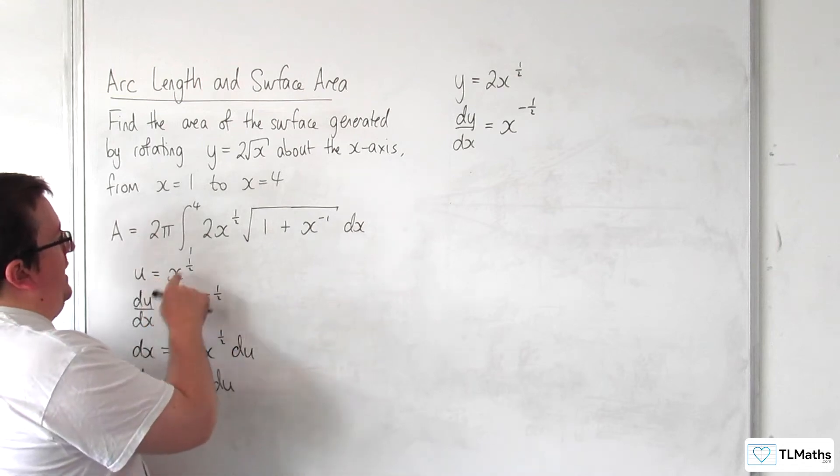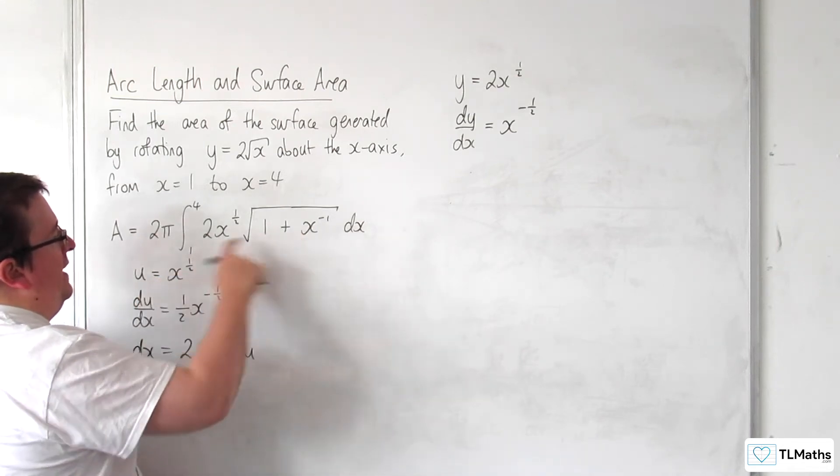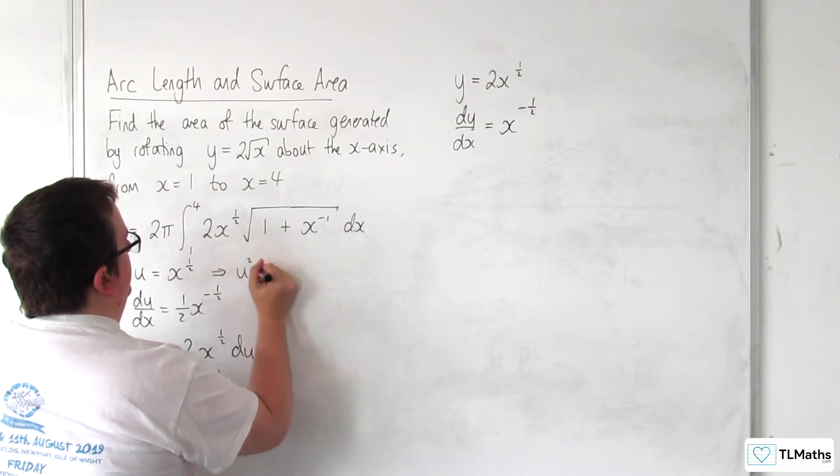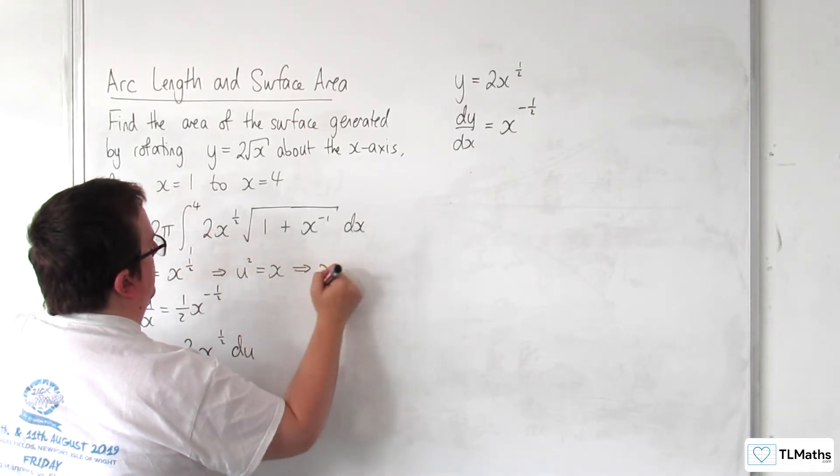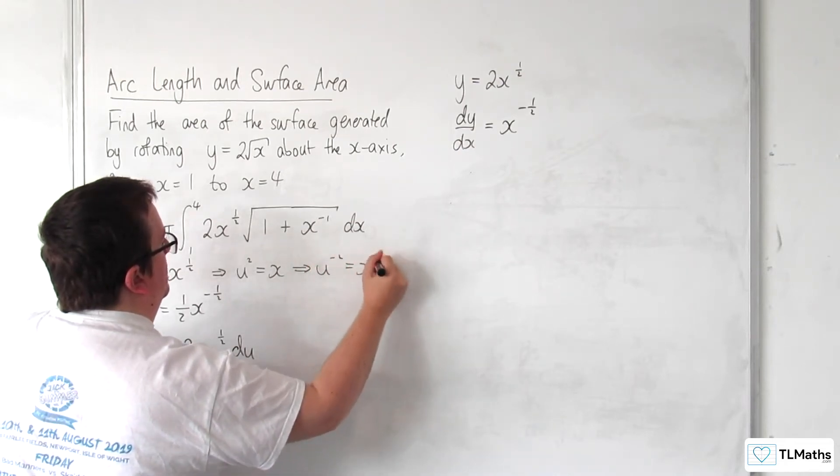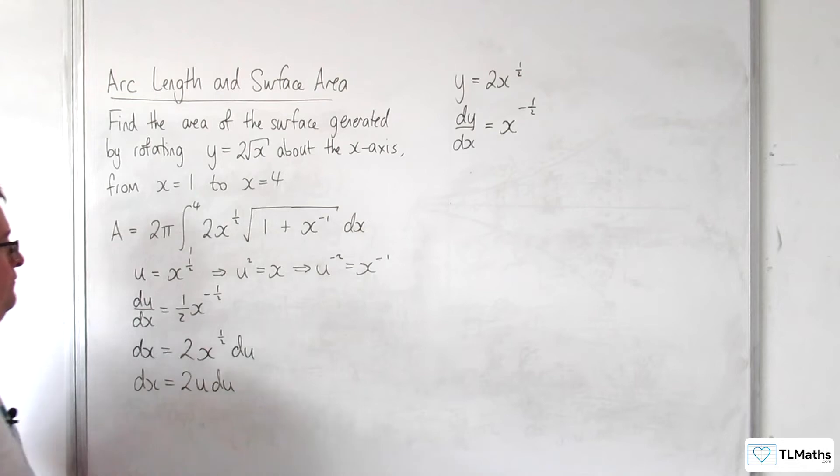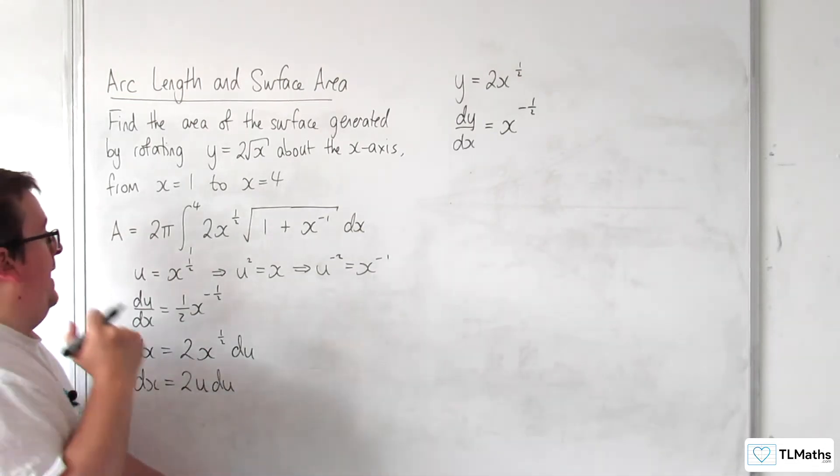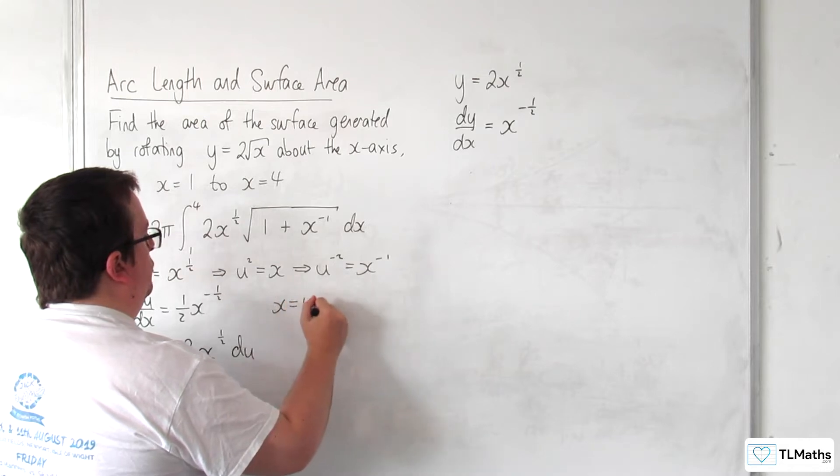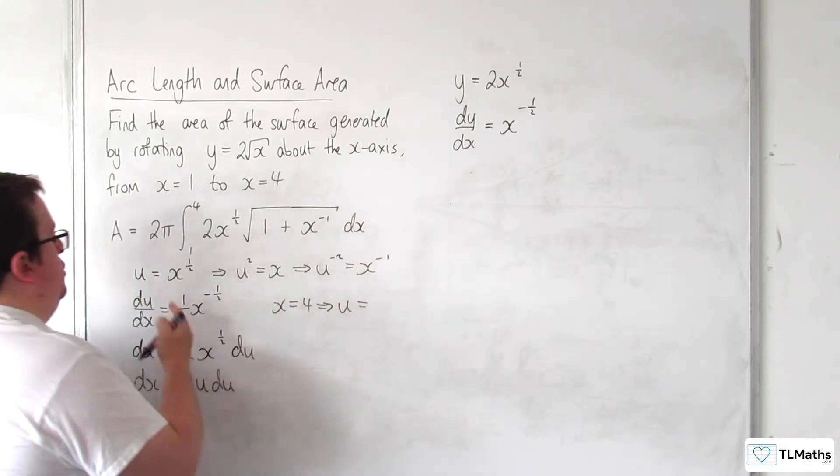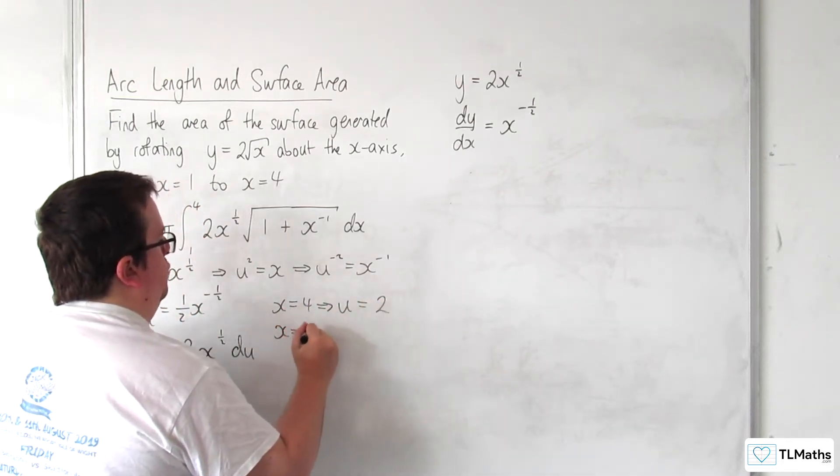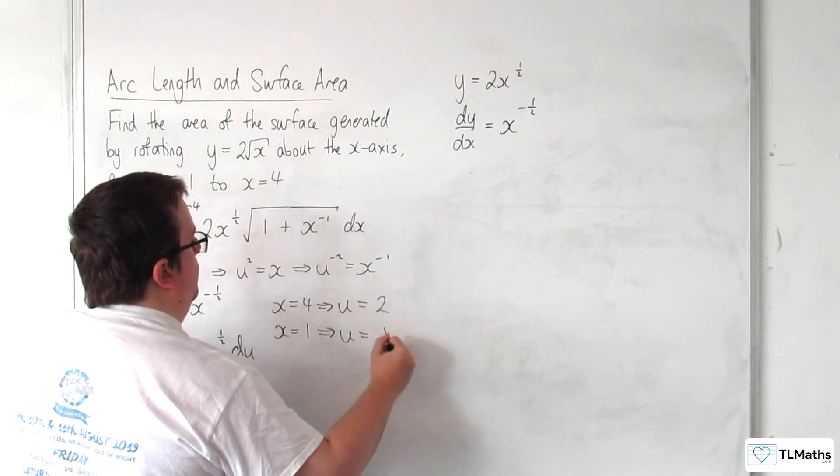I can easily replace that x to the half, now the x to the minus 1 that's there. So u squared is equal to x, so u to the minus 2 is equal to x to the minus 1. And I need to replace those limits as well, so when x is 4, u is going to be square root of 4 is 2, and when x is 1, u will be 1.